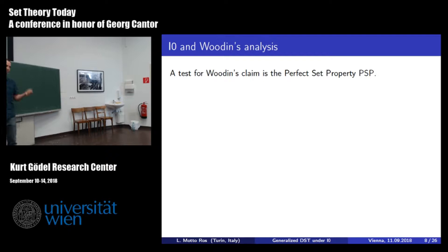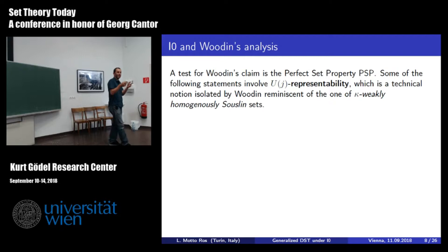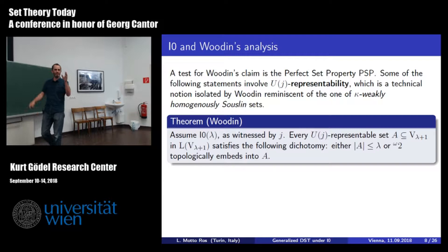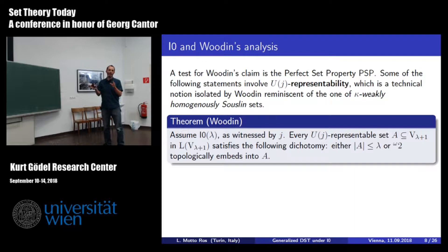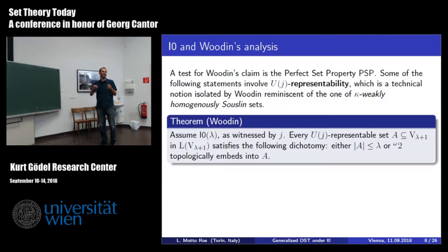A natural test for this analogy is the perfect set property, because it follows from AD—it holds in L(R) if you have enough AD. Woodin himself was able to prove something in this direction. The statement involves something called UJ-representability—a technical notion I cannot fully understand—but abstractly: if you have a UJ-representable set, which is the analog of being determined, then it satisfies a dichotomy: either it has size less than lambda, or the usual Cantor space topologically embeds into it. This is quite weak because lambda is much larger than the continuum, but the topological embedding must preserve structure, so it is not trivial.